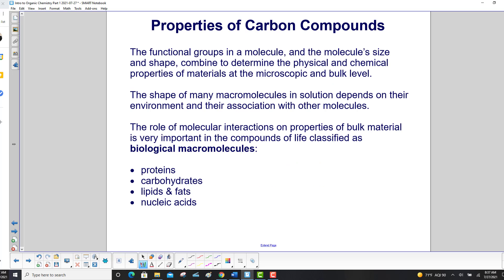The functional groups in a molecule and the molecule's size and shape combine to determine the physical and chemical properties of materials at the microscopic and bulk level. The shape of many macromolecules in solution depends on their environment and their association with other molecules. The role of molecular interactions on properties of bulk material is very important in the compounds of life, and they're classified as the biological macromolecules, and they include proteins, carbohydrates, lipids and fats, and nucleic acids.